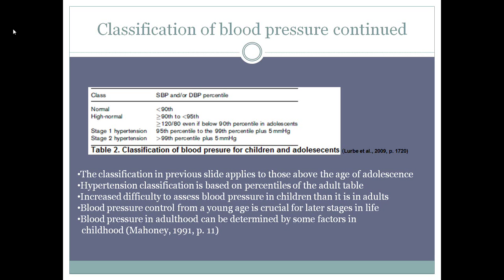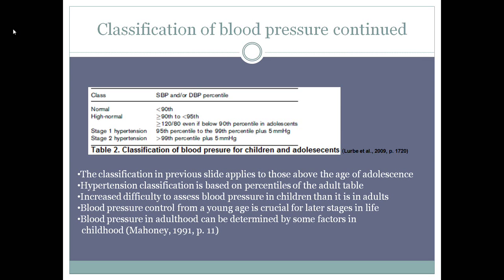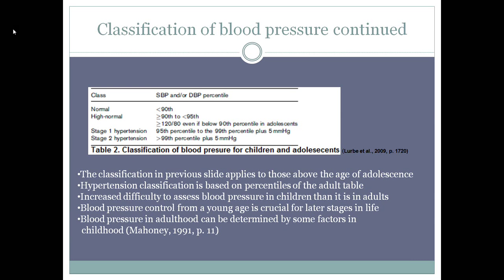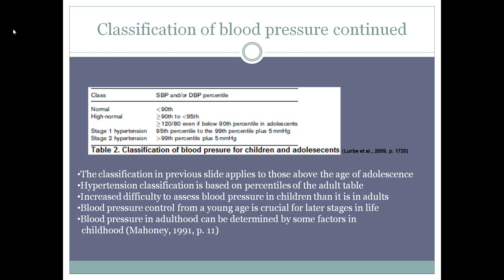Observing blood pressure control in children and adolescents is crucial to avoid hypertension in adulthood. Repeated measurements of blood pressure to reduce measurement error are identified in children with elevated blood pressure, along with assessment of comorbidities. Comorbidities to take into consideration include body size, family history of cardiovascular disease, and critical levels of blood pressure. Mahoney and colleagues state that children are particularly likely to become adults with high blood pressure if they are obese as children, become obese as young adults, or have a family history of hypertension.